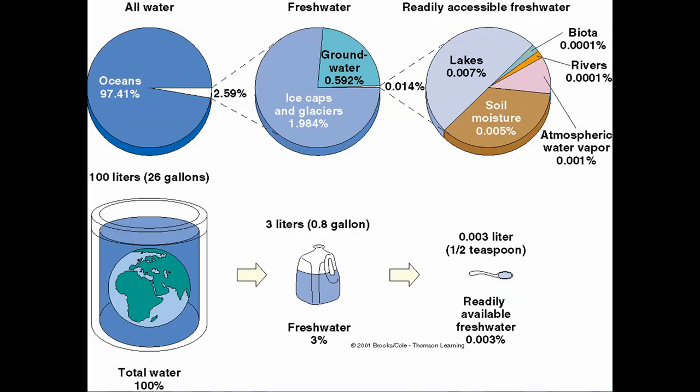Let's compress all the water on Earth to 100 liters — picture 52-liter bottles. Of those 100 liters, only three is freshwater, so about one and a half two-liter bottles are what we have to work with. Of that three liters, only a half a teaspoon is readily available to us.